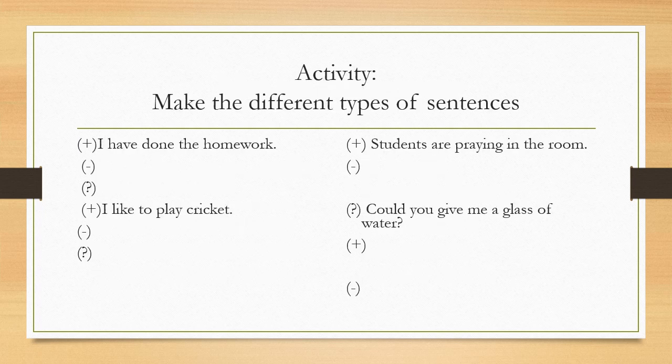We have learned up to now how to form positive sentences, negative sentences, and also how to form questions and imperatives. Now let's do an activity and make different types of sentences. For the first one, the positive statement is I have done the homework. If you want to make a negative statement, it would be I haven't done the homework. To form the question, it would be have I done the homework?